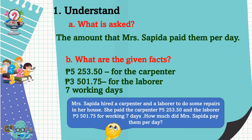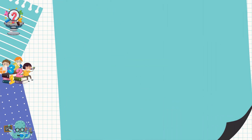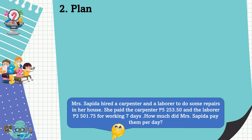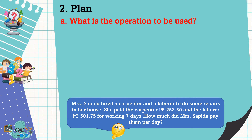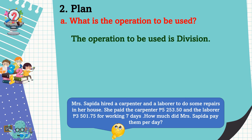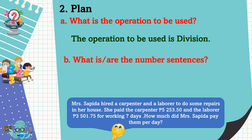We already understand the problem. So what is the next step? We're going to make a plan. What is the operation to be used? The operation to be used is division. What are the number sentences?